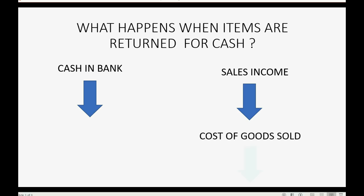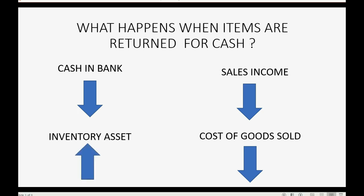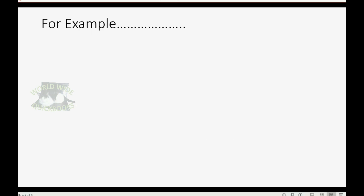Consequently, the cost of goods sold will also decrease by the amount that we paid when we bought the items for resale, because we just got them back, so they weren't sold, so cost of goods sold goes down. The only thing that increases is the inventory asset, because we just received back items that were sold, so we now have more available for sale in inventory.